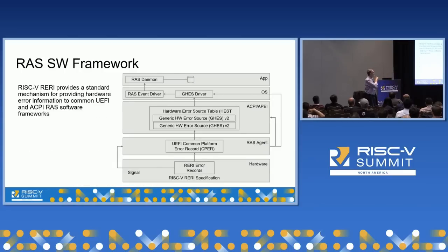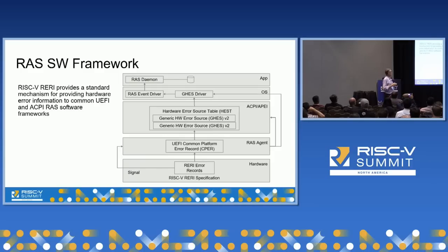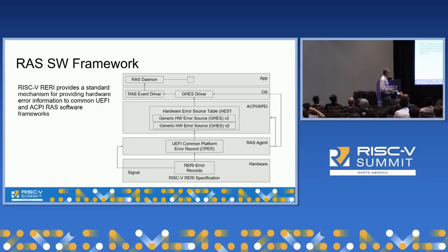From a software perspective, RARI reflects a Linux-based environment and leverages existing software standards including general RAS frameworks within Linux, UEFI, and ACPI. Various layers of system software correspond to these standards, starting at the hardware level where RARI captures and logs information about detected errors, signals them to a UEFI component, which turns that into software records passed up to other layers in the overall framework.